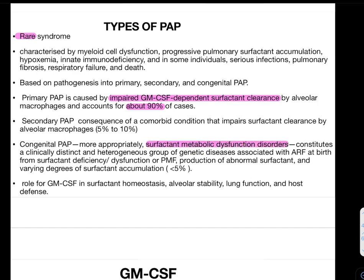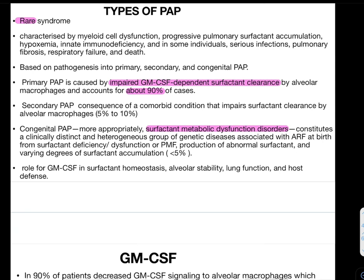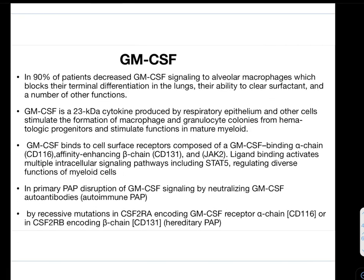GM-CSF plays a critical role in surfactant homeostasis, cellular stability, lung function, and host defense. In 90% of patients, decreased GM-CSF signaling to alveolar macrophages blocks their terminal differentiation in the lungs and their ability to clear surfactant. If GM-CSF is absent, there will be no terminal differentiation of macrophages — this is a very critical mechanism.